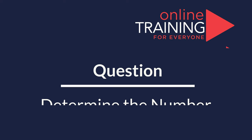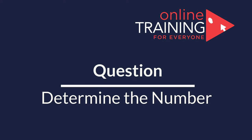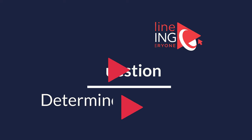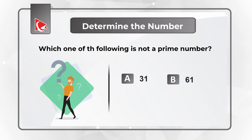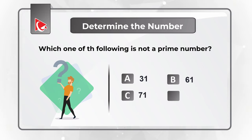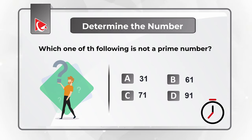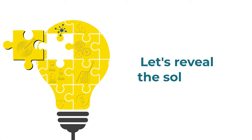Here is an interesting question where you're presented with a set of numbers and you need to determine which number is not a prime number. You have four different choices: choice A 31, choice B 61, choice C 71, and choice D 91. Give yourself a little bit of time, maybe recall the definition of prime numbers, and see if you can come up with the solution.